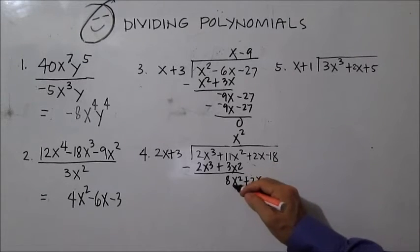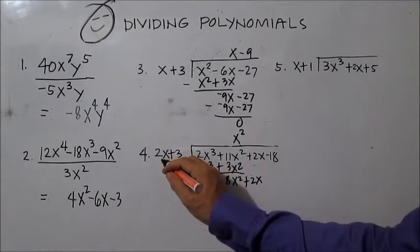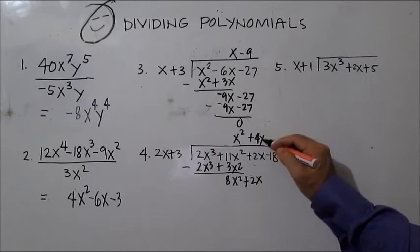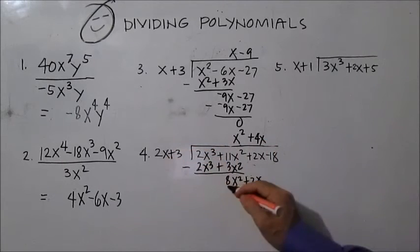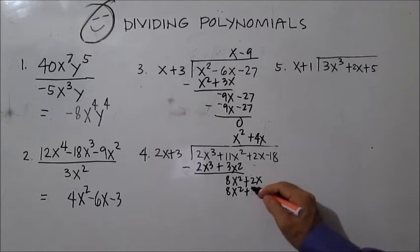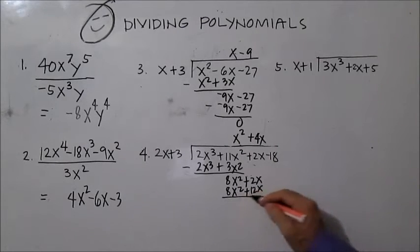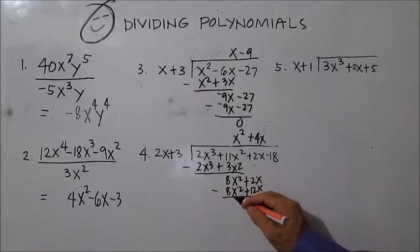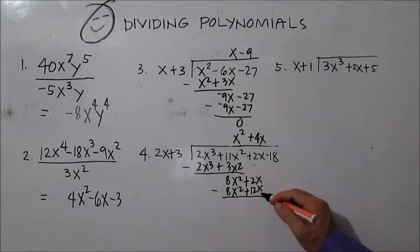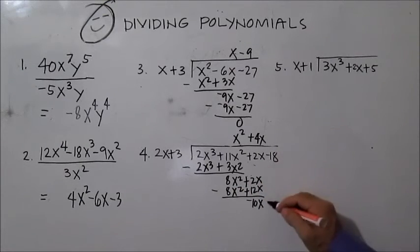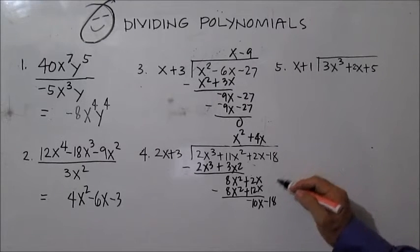Divide the first term: 8x squared divided by 2x is 4x. Then 4x times 2x is 8x squared, and 4x times 3 is 12x. Subtract: 8x squared minus 8x squared is 0, and 2x minus 12x is negative 10x. Bring down negative 18.